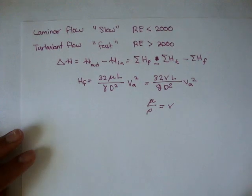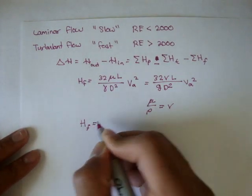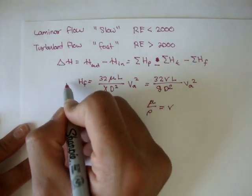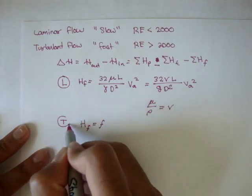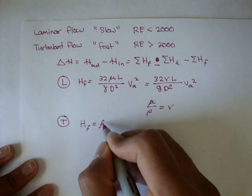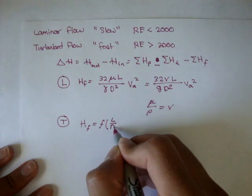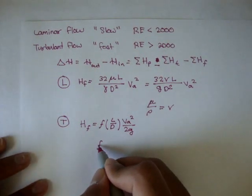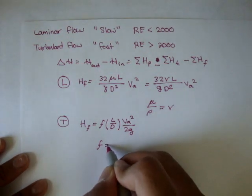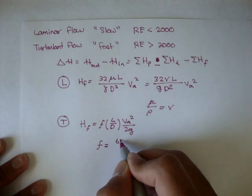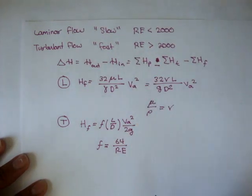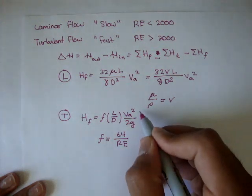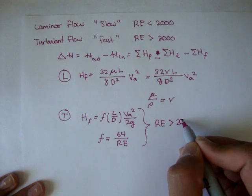For turbulent flow, I'm introducing HF equals the frictional factor times the length over the diameter of the pipe times the average velocity squared over 2G. The frictional factor is just a number found by dividing 64 by the Reynolds number — so 64 divided by whatever the Reynolds number of the liquid is. This is all true for Reynolds numbers greater than 2,000.